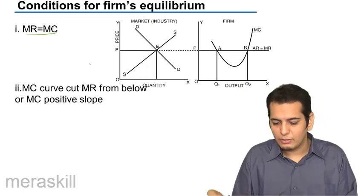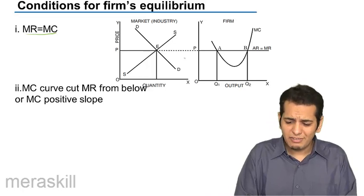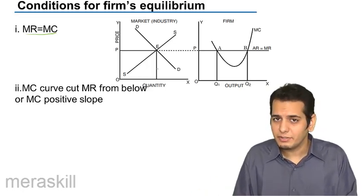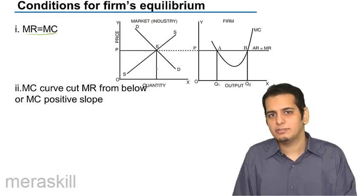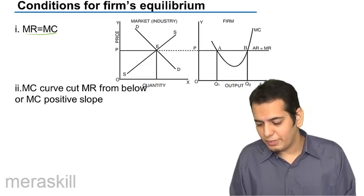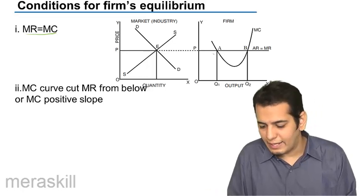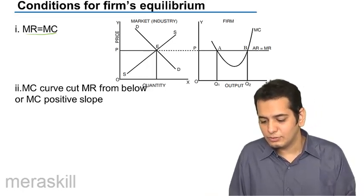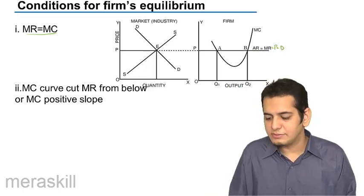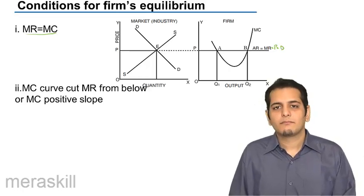Now let's take a look at the graphs presented in this slide. We are well versed with the first graph wherein the price is getting set in the market by the forces of demand and supply. The price set in the market is P. This is the price which has to be accepted by the firm, and it is also the AR and MR curve for the firm.